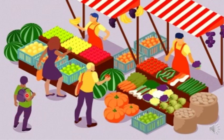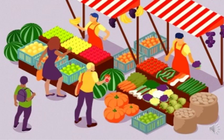A man is standing behind her in a line waiting for his turn. This is the second stall selling vegetables. She has pumpkin, carrots, cabbages, and cauliflower. A customer wearing a yellow shirt is buying vegetables from her. Can you see a red and white shade on top? This is a shade to keep the sun's heat away.